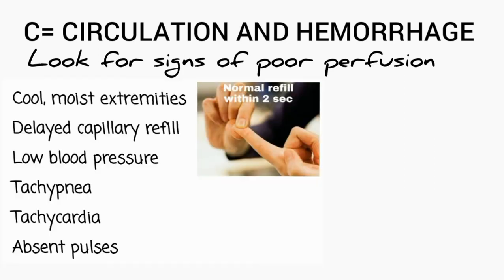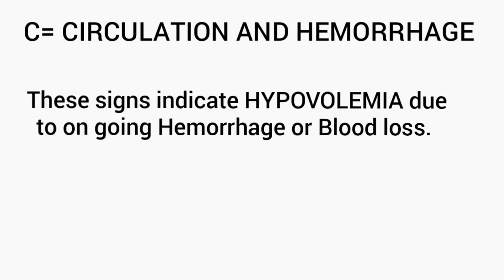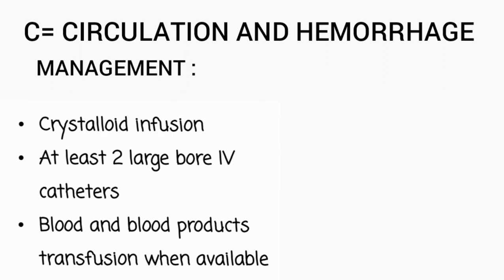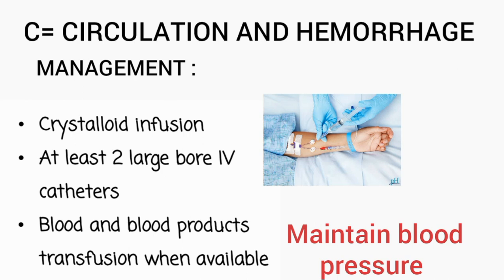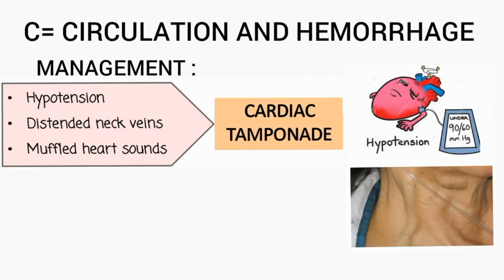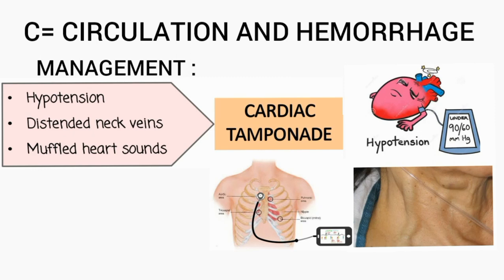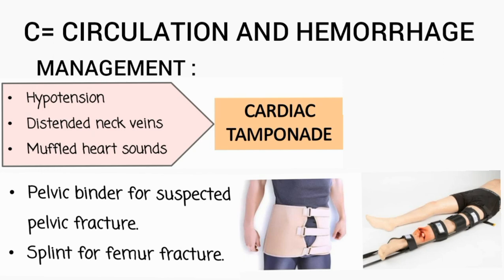Once A and B are evaluated, proceed to circulation. It is assessed by looking for signs of poor perfusion: cool moist extremities, delayed capillary refill, low blood pressure, tachypnea, tachycardia, and absent pulses. If these signs are present, the patient is hypovolemic due to ongoing hemorrhage. Immediate crystalloid infusion should be given via two large-bore IV catheters to maintain blood pressure while awaiting blood products. If hypotension is accompanied by distended neck veins and muffled heart sounds, cardiac tamponade should be suspected. A pelvic binder should be applied for suspected pelvic fracture and a splint for femur fracture.